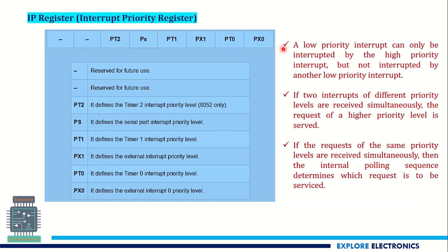The IP register is the Interrupt Priority Register, also an 8-bit register. By setting the corresponding interrupt bit to 1, we can set that interrupt as high priority. PX0 corresponds to external interrupt 0 (INT0) and PT0 corresponds to timer 0. For example, if PT0 is set to 1 and other bits are 0, the highest priority will be given to timer interrupt 0 — even if an external interrupt arrives, the timer interrupt will be served first. In this way, we can enable or disable priorities.